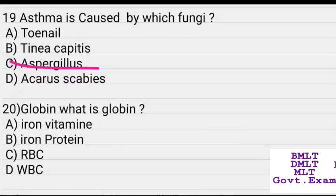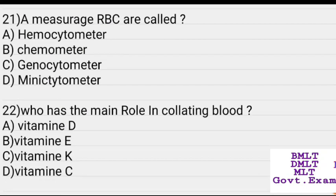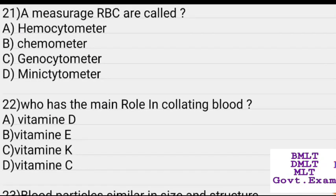What is globulin? Options: iron vitamin, iron protein, RBC, WBC. Answer: Iron protein. The instrument used for counting blood cells is the hemocytometer.